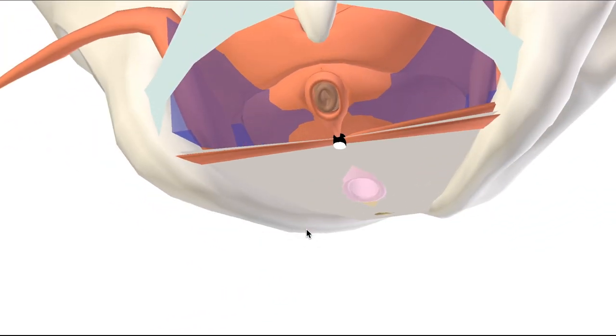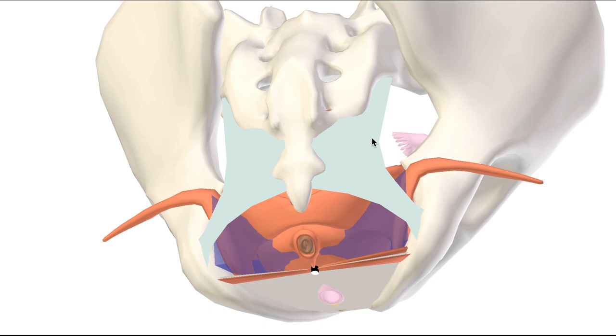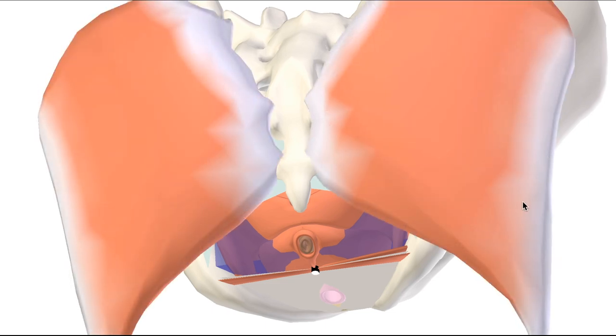And the posterior wall is the sacrotuberous ligament, as well as gluteus maximus.